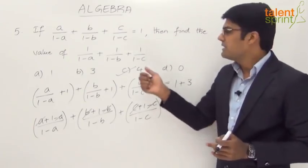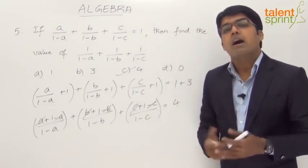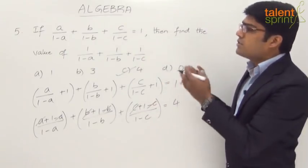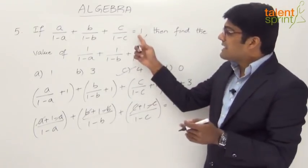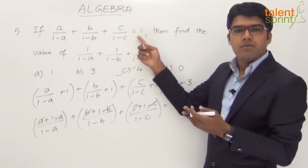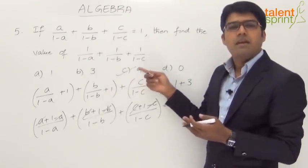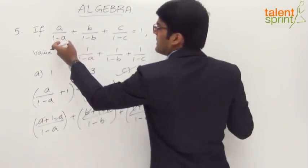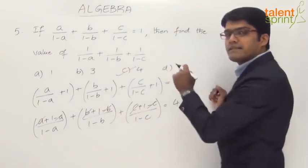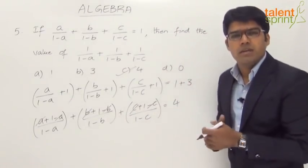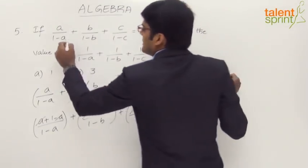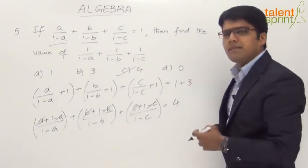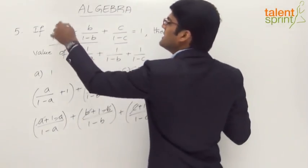So option C, 4, is the answer. Alternatively, if you prefer not to follow this procedure, try substituting values of a, b, and c that satisfy the given equation. Once you find valid values, substitute them into the required expression to find the answer. The given expression a/(1−a) + b/(1−b) + c/(1−c) = 1 has no additional conditions on a, b, c. Notice each term looks similar, so let us assume each term equals 1/3.